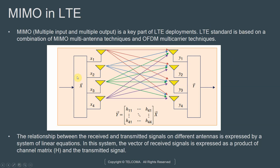Here we have the transmitter and the receiver, with signals coming into the transmitter. In this case there are four antennas at the transmitter and four antennas at the receiver. At every receiver, due to multipath, each receive antenna will receive signals from each of the four transmitting elements. The relationship between the received and transmitted signals on different antenna paths is expressed as a system of linear equations, where the vector of received signals is expressed as a product of the channel matrix and the transmitted signal.